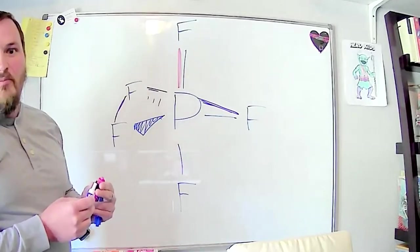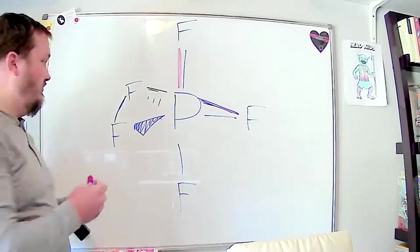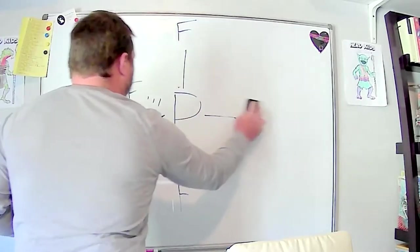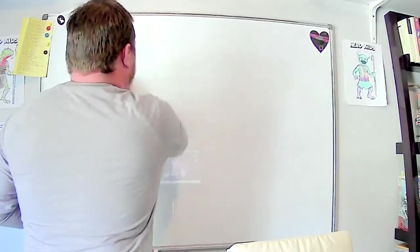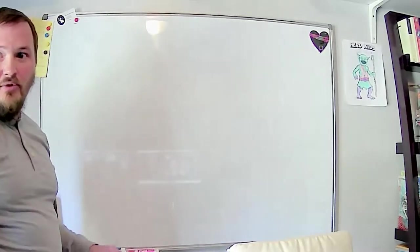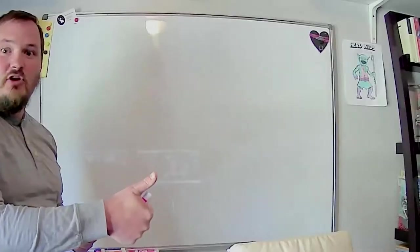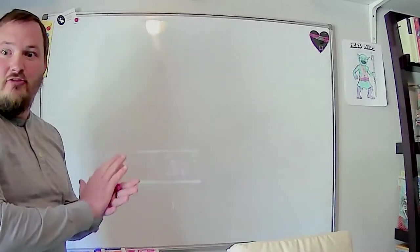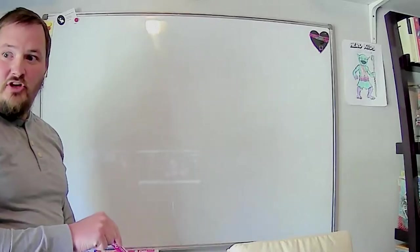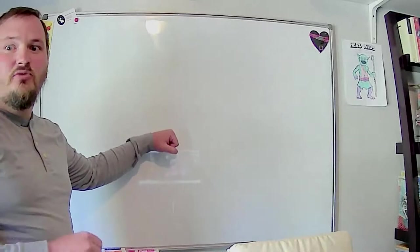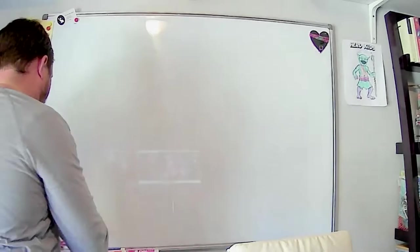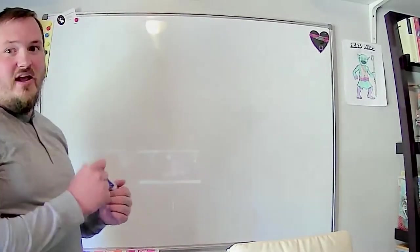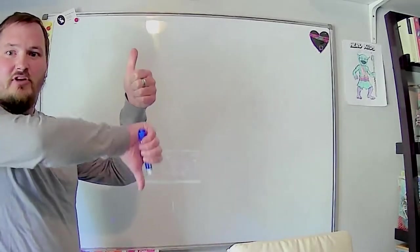This shape is called trigonal bipyramidal because it looks like two pyramids stacked on top of each other. So to summarize our five basic shapes: linear is easy to draw because it's flat — just a straight line. Trigonal planar is also flat — just a triangle shape. Tetrahedral is a little tricky. Trigonal bipyramidal is what we just did. The last one is octahedral.